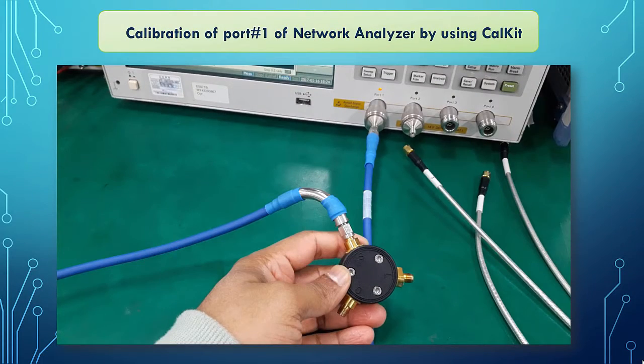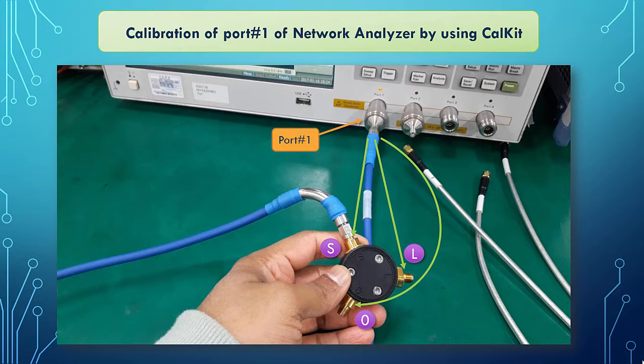So let's have a quick glance of calibration process. This is the port 1 of network analyzer and what I'm going to do is that I'm going to connect the port 1 with these three terminals of the cal-kit one by one and calibrate the port 1. Each time you want to use any port of the network analyzer, you have to calibrate that port using this device.